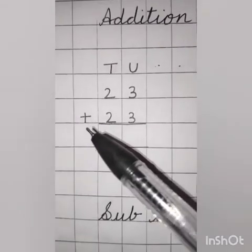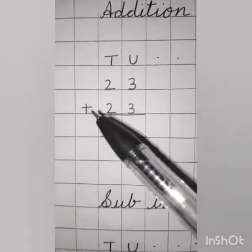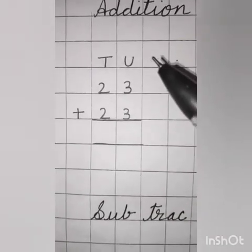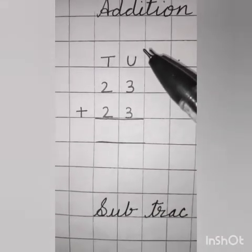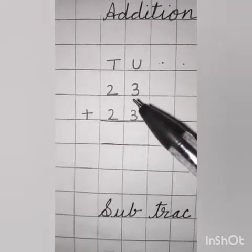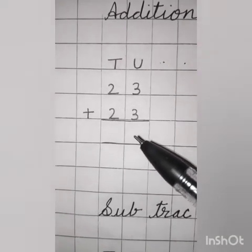Now, which sign is this? Yes. Plus. Plus means addition. Now, first, we will read the sum. Unit tens. Two, three. Twenty-three. Plus two, three. Twenty-three.